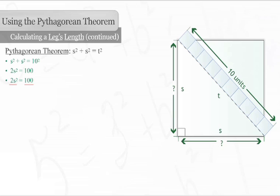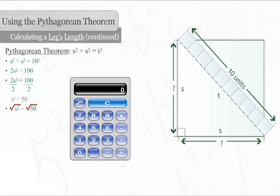Now we will divide both sides by two, so S squared is by itself on one side of the equation. The result is S squared equals fifty. When we take the square root of both sides, we find that S equals seven and seven hundredths.